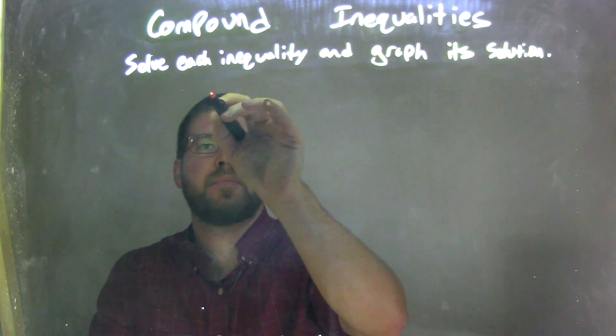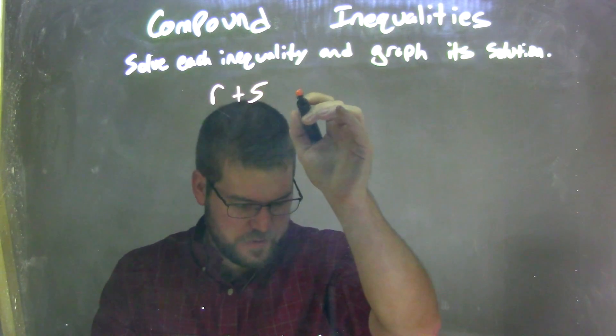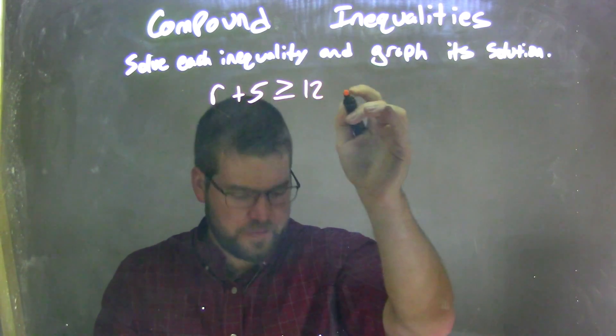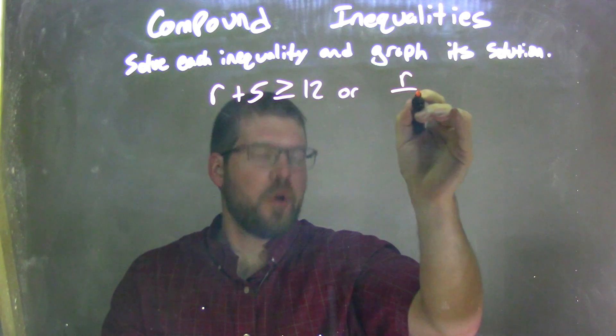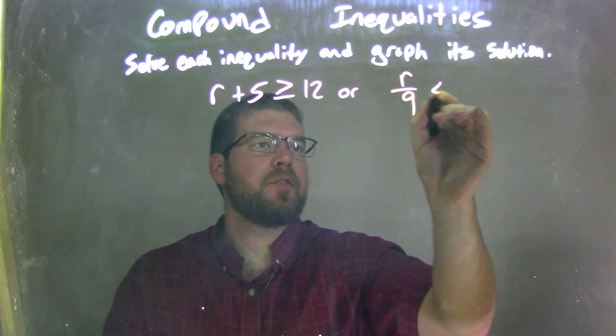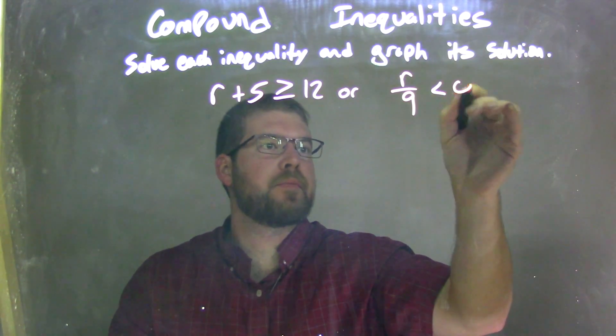So if I was given this inequality, r plus 5 is greater than or equal to 12, or r over 9 is less than 0.